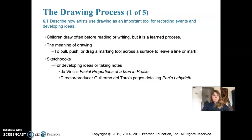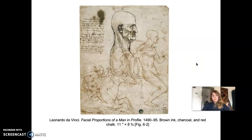We're going to look at Leonardo da Vinci's Facial Proportions of a Man in Profile, and then also Guillermo del Toro's sketchbook, which has a Pan's Labyrinth reference. Da Vinci is described as a relentless artist whose sketches supported his scientific research — he really was quite the scientist as well as artist, and he merged the two in an interesting way.